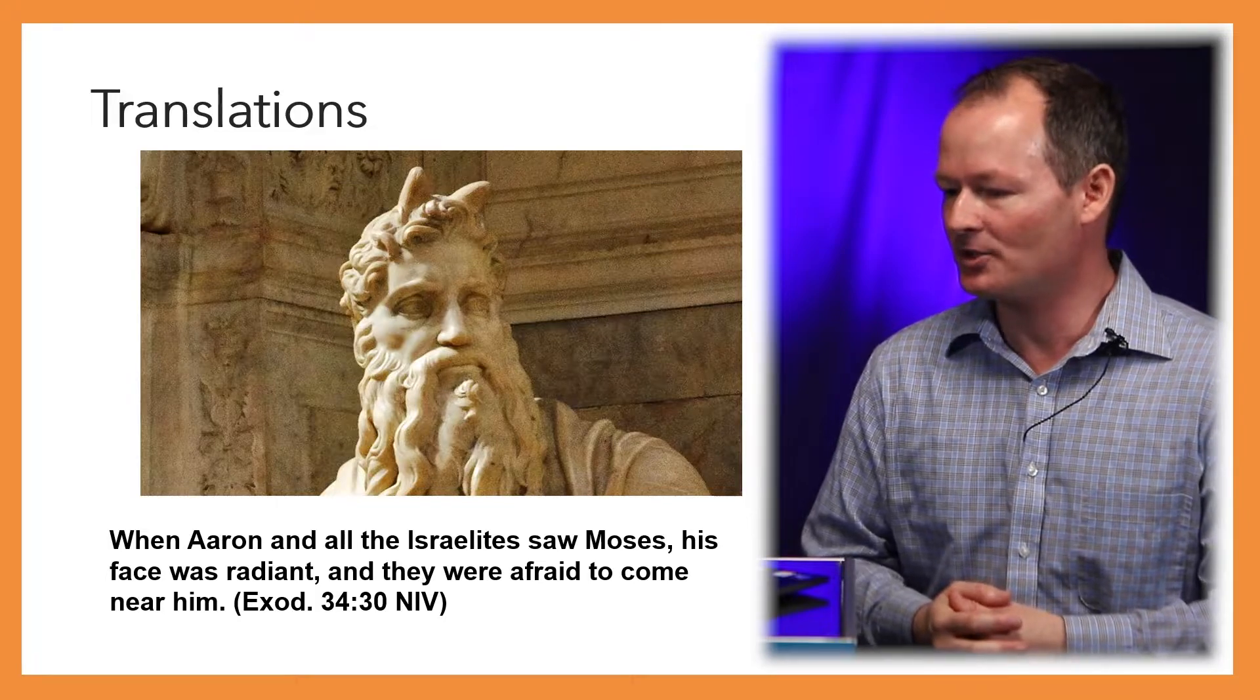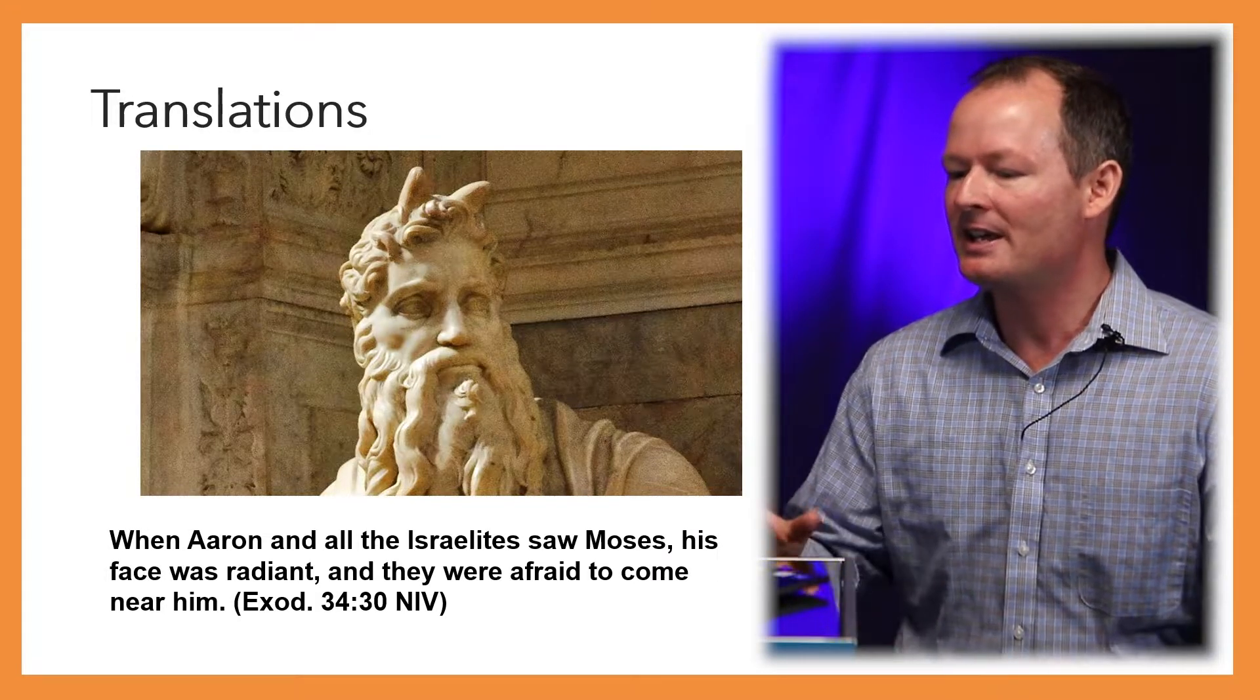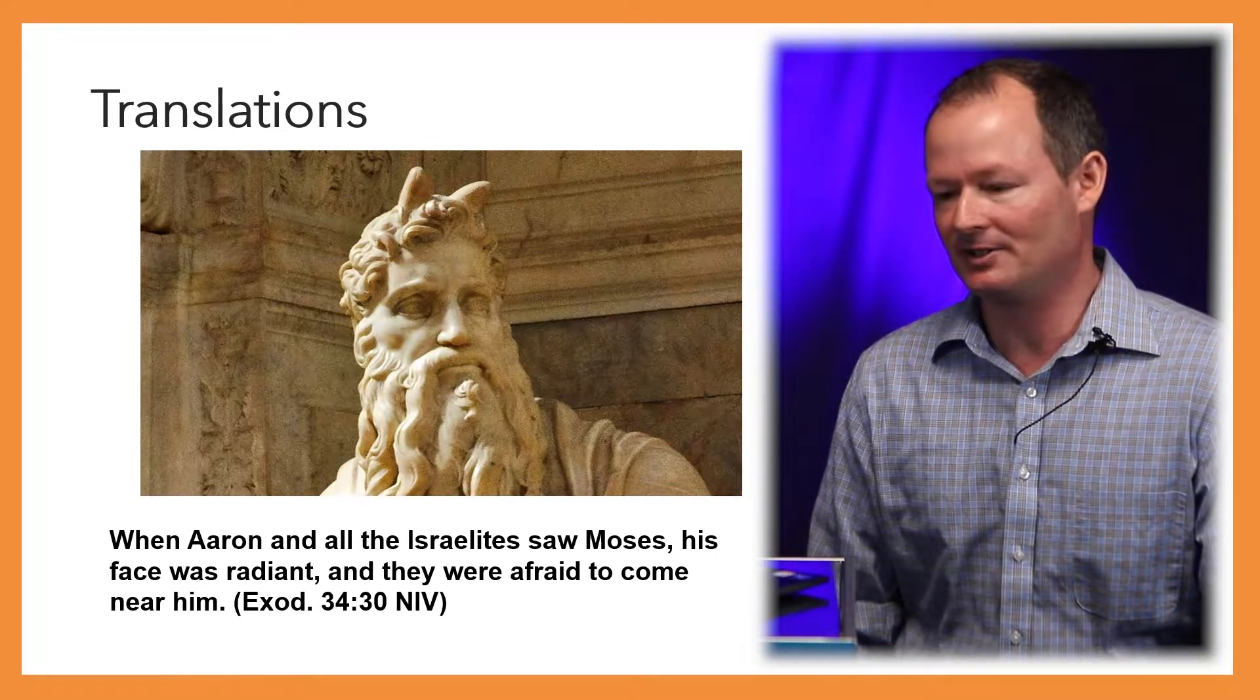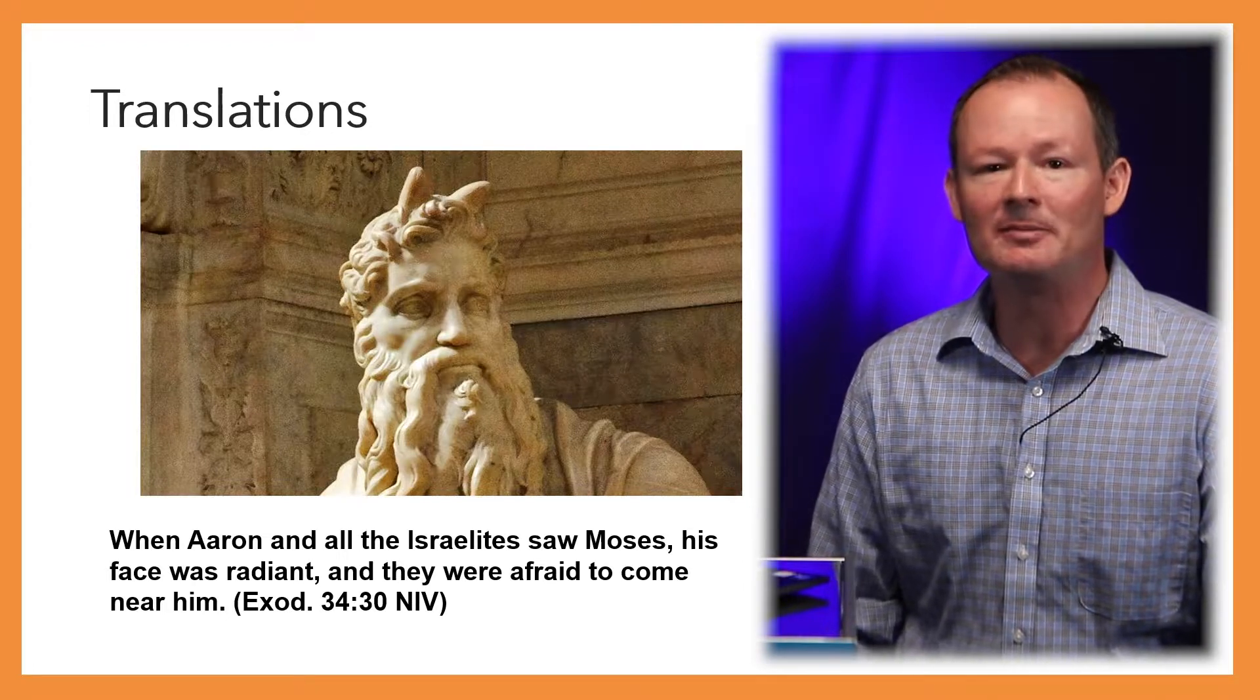I'm going to read it in the NIV version. When Aaron and all the Israelites saw Moses, his face was radiant, and they were afraid to come near him. That word radiant has been translated different ways. I believe radiant is a proper translation. It means that Moses' face was shining as he came down from the mountain. The King James also uses a word to indicate that. It says his face shone, so it uses an older English. But the idea is the same, that Moses' face is shining.